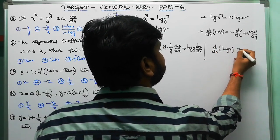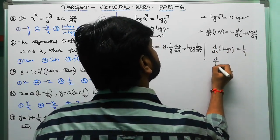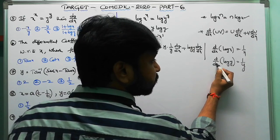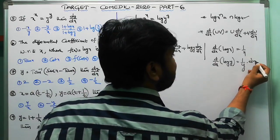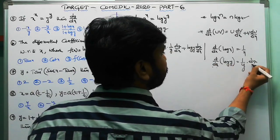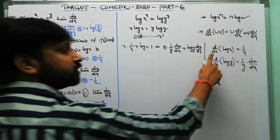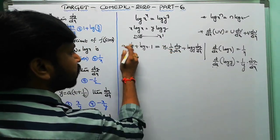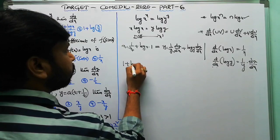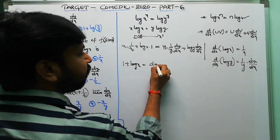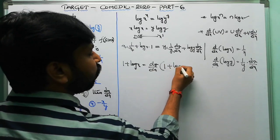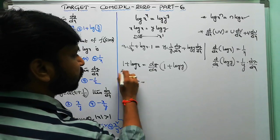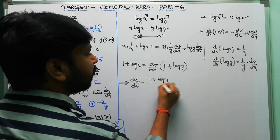The key difference: d/dx of log x is 1/x, but d/dx of log y is (1/y)·(dy/dx) by the chain rule. After simplification, x/x cancels on the left and y/y cancels on the right, giving 1 + log x equals (1 + log y)·dy/dx. Therefore dy/dx equals (1 + log x)/(1 + log y). Option 3 is the correct answer.